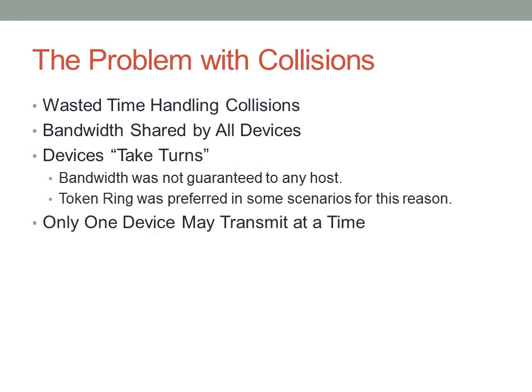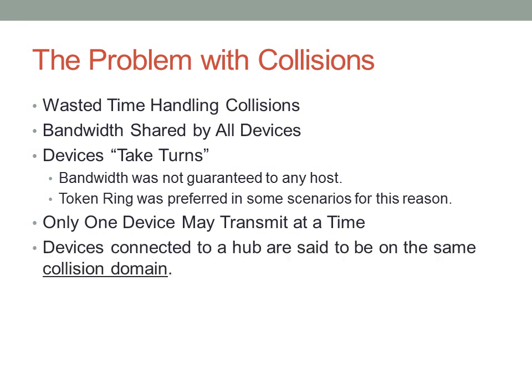Only one device may transmit at a time, which causes all of the issues mentioned above. Devices connected to a hub are said to be on the same collision domain. Basically, any devices that share the same Ethernet segment are on the same collision domain — a collision could occur between any device and another on that same hub or Ethernet wire. So whenever you see devices connected by a hub, those devices are sharing the same Ethernet wire and belong to the same collision domain.